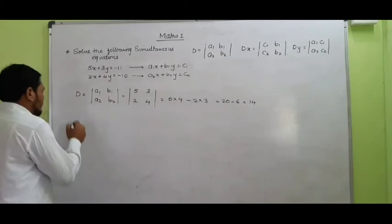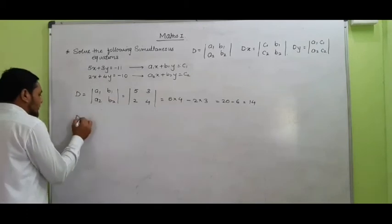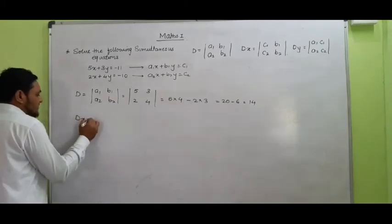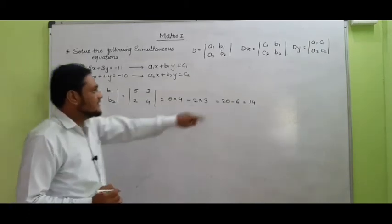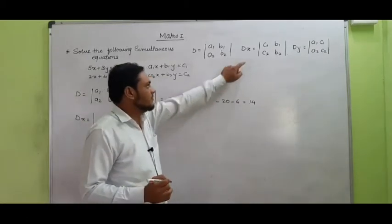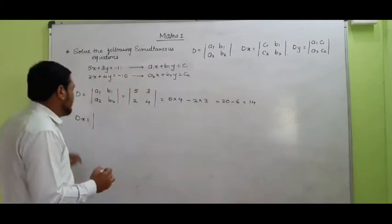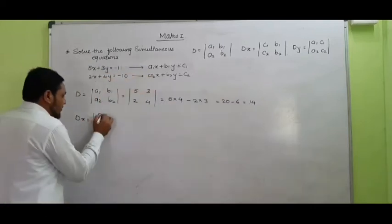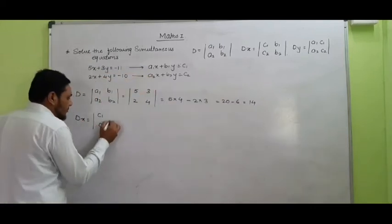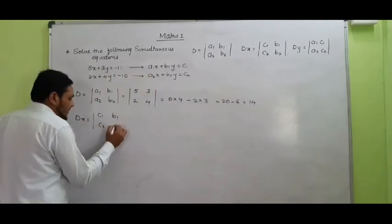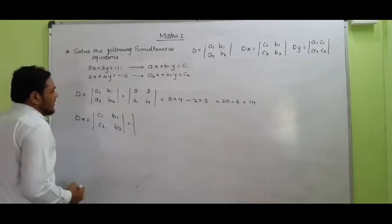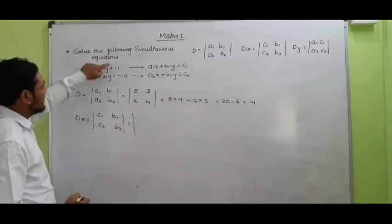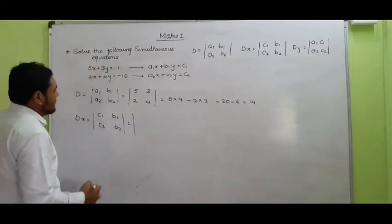Now we will find the value of DX. The determinant of X, that is DX, will be equal to C1, C2, B1, B2. So here we substitute the values: C1, C2, B1, B2.